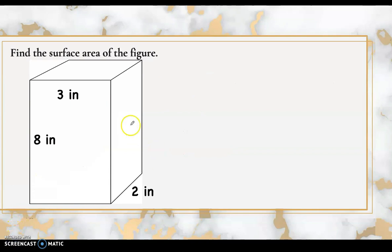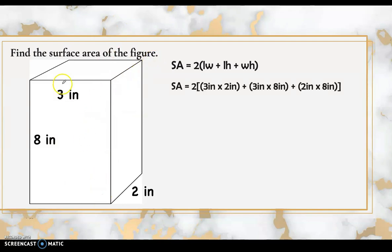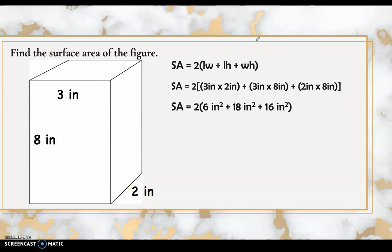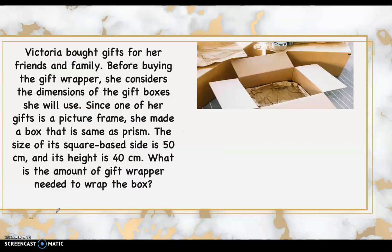Next, find the surface area of this figure. The length is 3 inches, the width is 2 inches, and the height is 8 inches. Substituting: length times width is 6, length times height is 24 — wait, 3 times 8 is 18 square inches, and width times height is 2 times 8 equals 16 square inches. Simplifying: 6 plus 18 plus 16 equals 40, then multiply by 2. The surface area is 80 square inches.